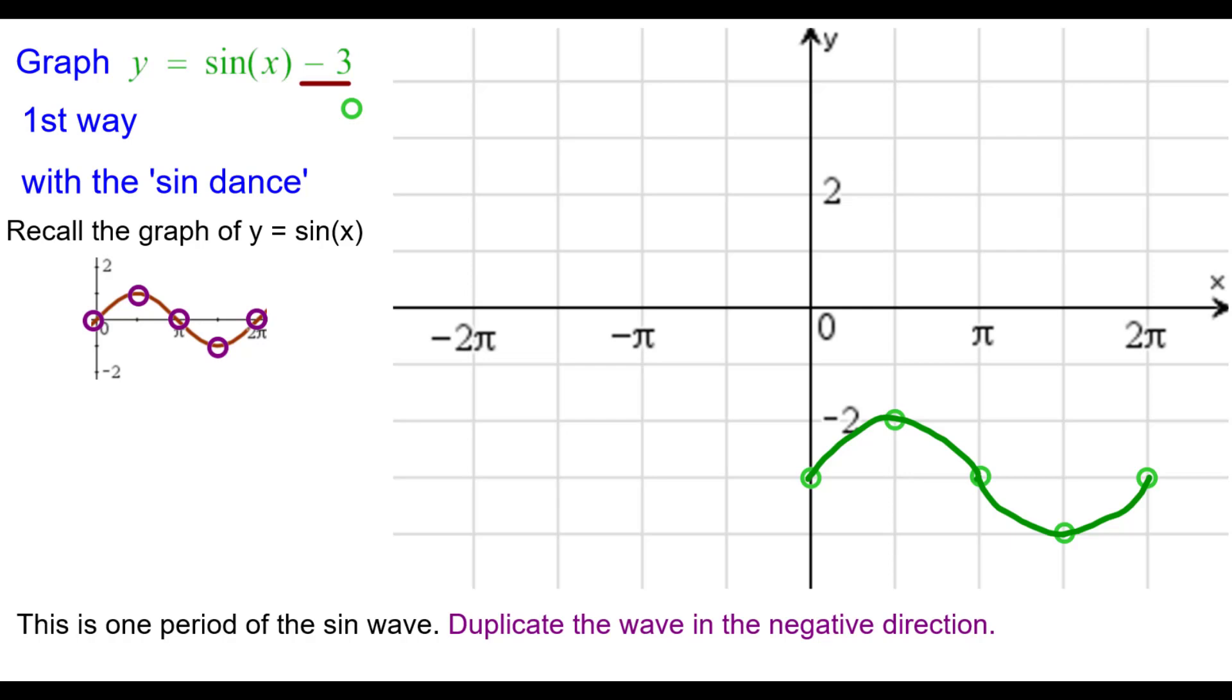By doing that, we'll start with the initial point and go back the period, which is 2 pi. So it will be at negative 2 pi, negative 3. This point backs up also a period, 2 pi, to negative 3 pi over 2, negative 2.